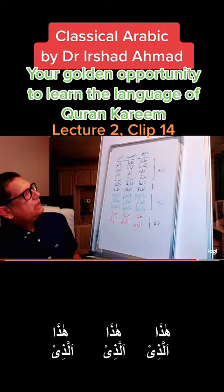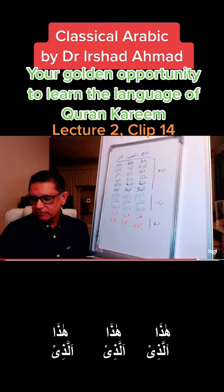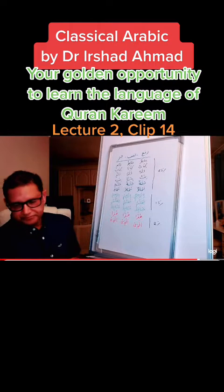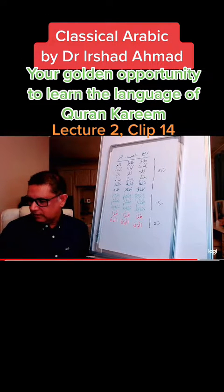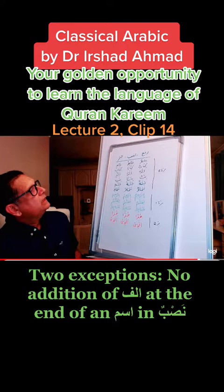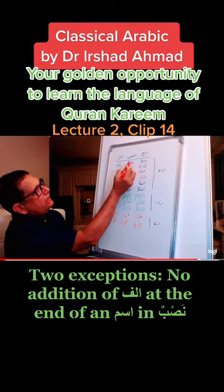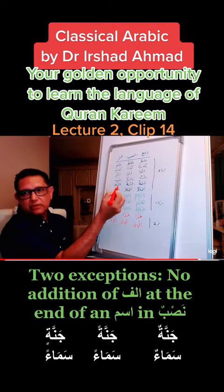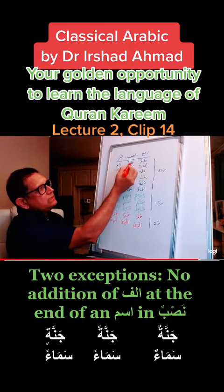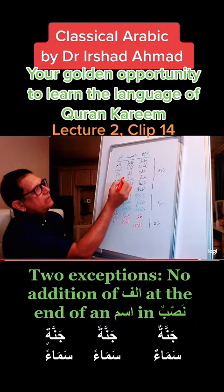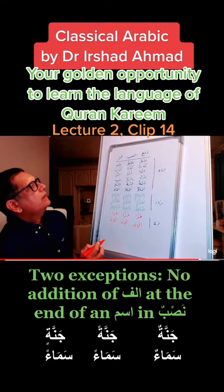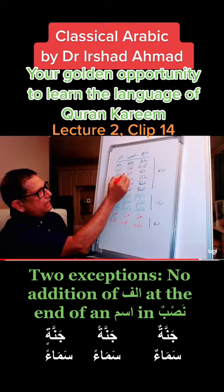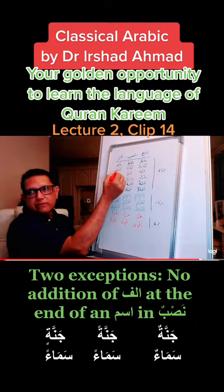There is another point I want to make at this stage. If you look carefully here, I'm sure you have already noticed that when we write a noun in Nasab, we add an Aleph. This is the spelling rule — it doesn't change the meaning of the noun, it's just a spelling rule. We add Aleph here, so the majority of nouns will take Aleph at the end of the word in the state of Nasab.